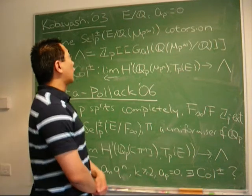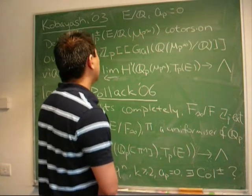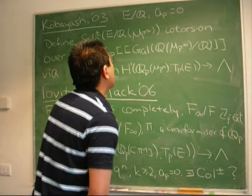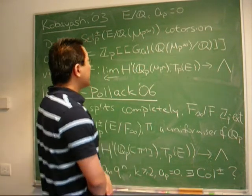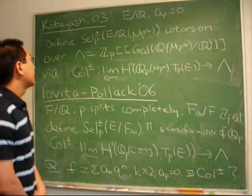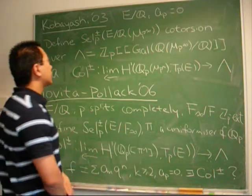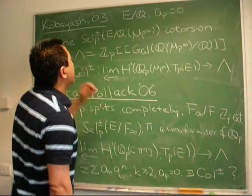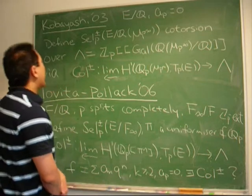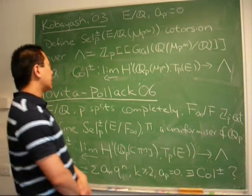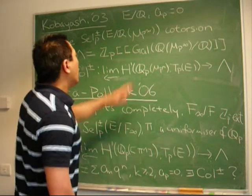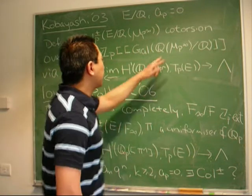In Kobayashi's work you have an elliptic curve E over Q and you fix the prime P at which E has supersingular reduction and you also assume AP is equal to 0. And then he defines this plus and minus Selmer group of E over the extension of Q by the P power roots of unity. And he shows that these Selmer groups are lambda quotients where lambda is the Iwasawa algebra of the Galois group of this extension.